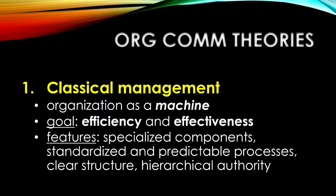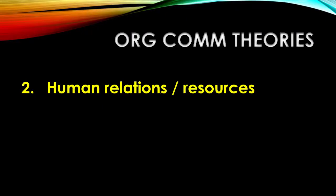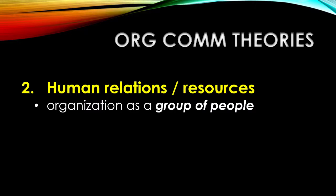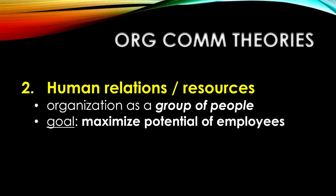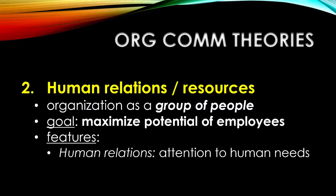As a potential response to classical management approaches, the second theoretical approach we see in the middle part of the 20th century is human relations and human resources theories. This approach sees the organization as a group of people and recognizes the fundamental importance of the human element in organizations because, after all, organizations are made of people and what they do. The goal of these theories is to maximize the potential of employees, recognizing that if employees get specific recognition and attention and have their needs met, they can do more for the organization and the entire organization benefits. In human relations theory, the real emphasis is on attention to human needs — specifically the motivational needs from Abraham Maslow. If employees have their needs met, they are more productive employees.